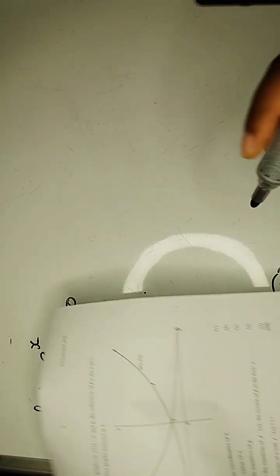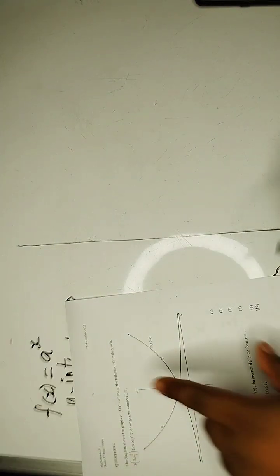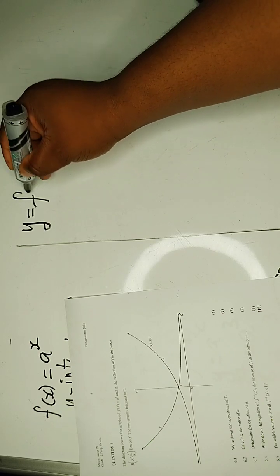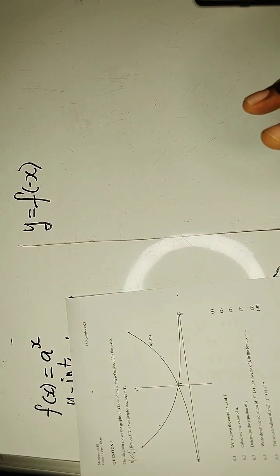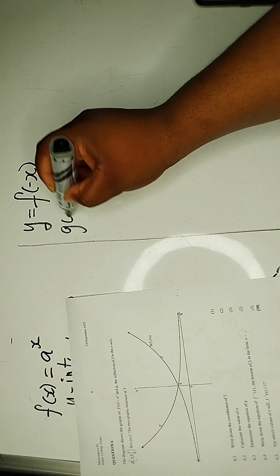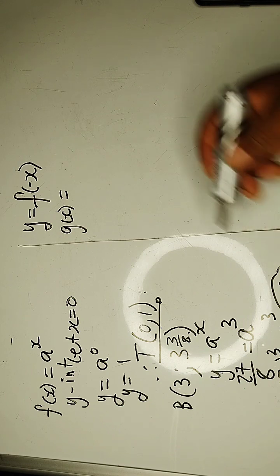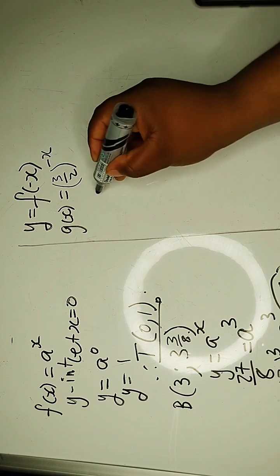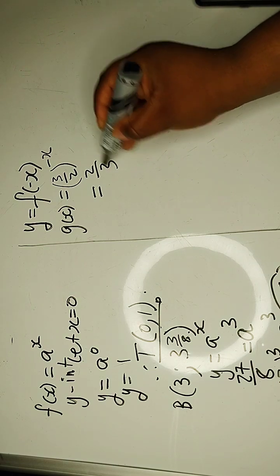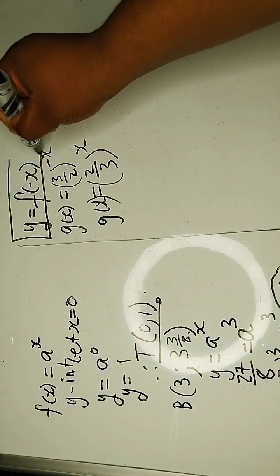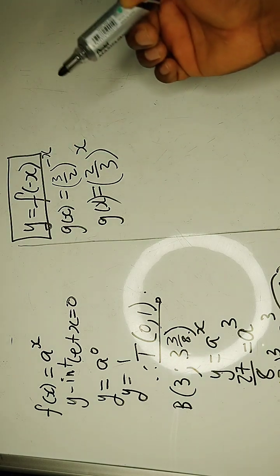Then, let's continue with the equation. Then, the question, continue and say, determine the equation of G. G, remember what did they say? They said G is a reflection about the y-axis. If it's a reflection about the y-axis, you know that it is y is equals to F into negative x. This is a reflection about the y-axis. In the reflection about the y-axis, x changes.